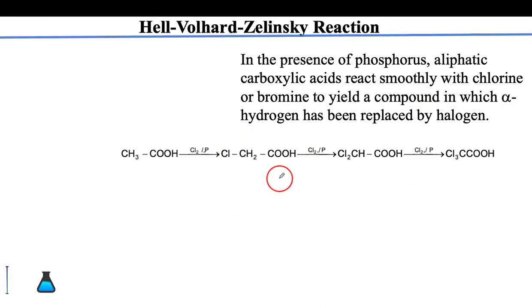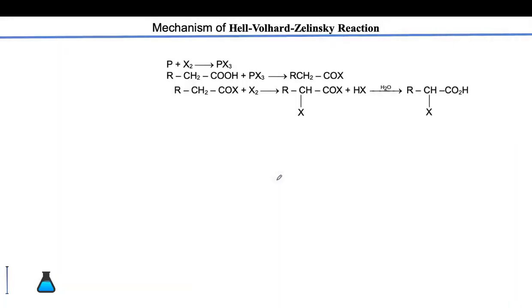Let's see the mechanism of the HVZ reaction. In this reaction, we treat phosphorus with bromine or any other halogen like chlorine, in which phosphorus is a limiting reagent. Phosphorus and bromine at first give you PBR3.